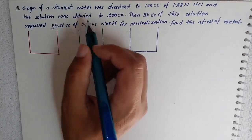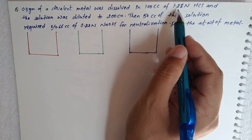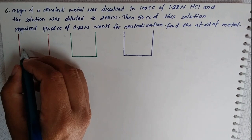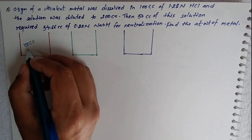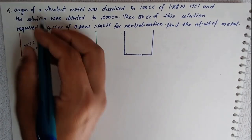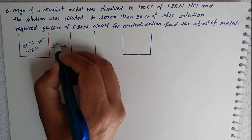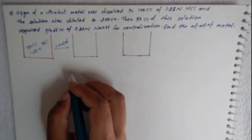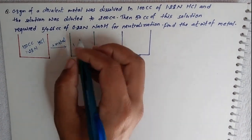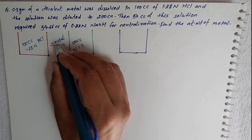0.8 gram of a divalent metal was dissolved in 100 cc of HCl. The HCl concentration is 1.28 N, and the metal reacts with the HCl in a chemical reaction.